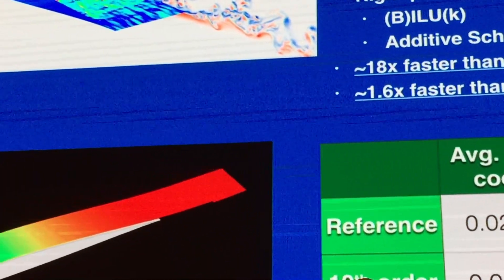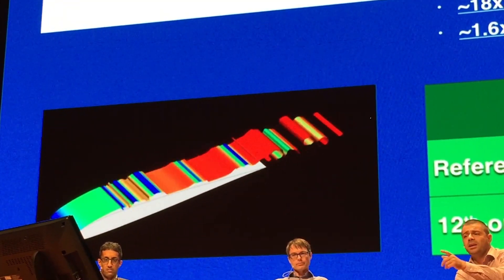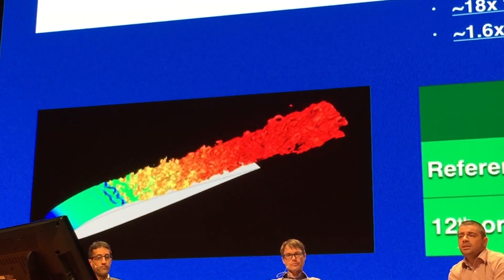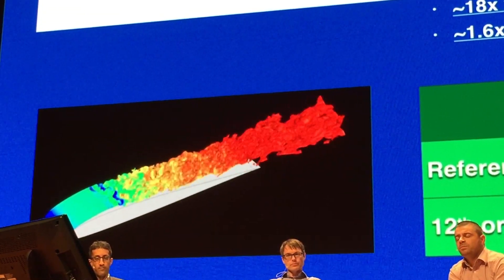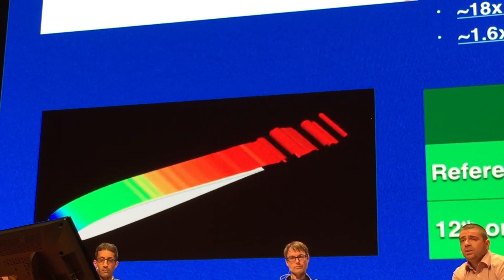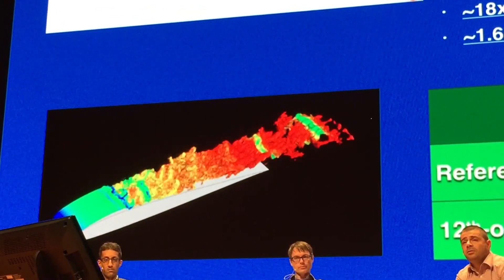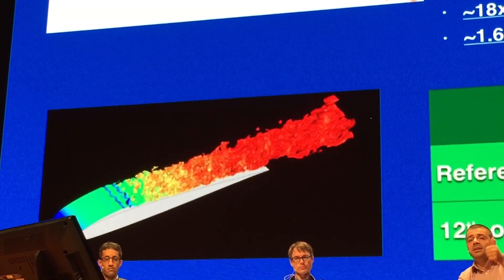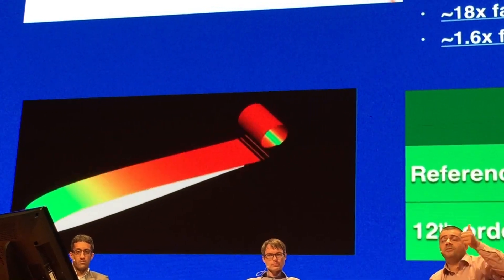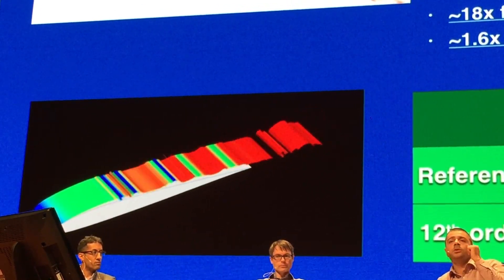This is another test case — a transitional flow where the flow behaves from a very ordered to a chaotic one. We have a reference solution computed by several groups in the literature, and we compute the solution with our 12th-order scheme. There is an excellent match between the lift coefficient and the drag coefficient. The lift coefficient tells you how much force you have in the vertical direction — keeping the airplane up — and the drag is the force that pulls you backwards.